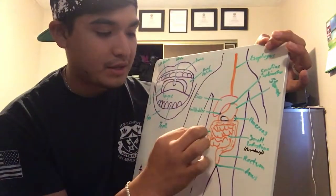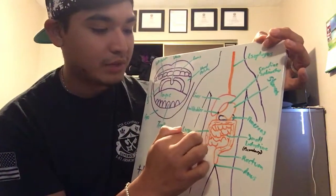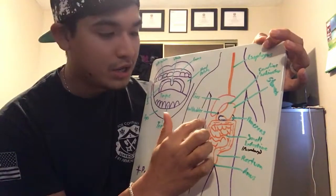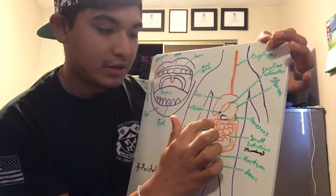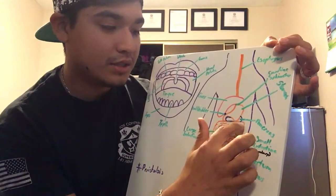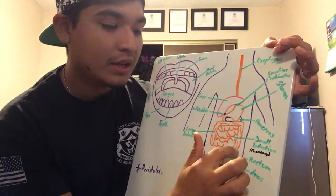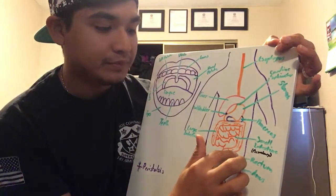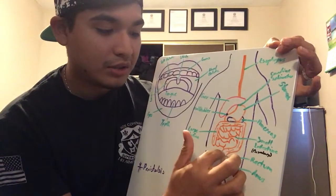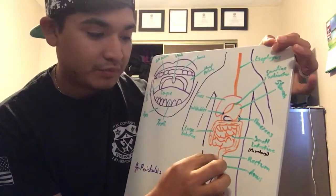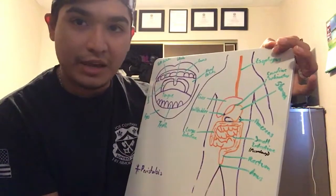This is carried through the ascending colon, through the transverse colon, down the descending colon, and through the sigmoid colon. Then it goes through the rectum and out through the anus.